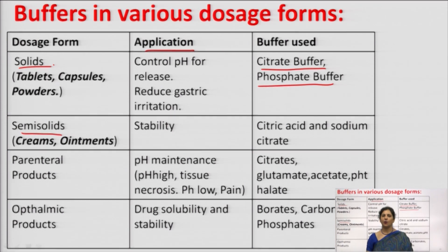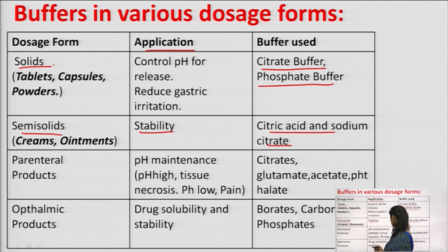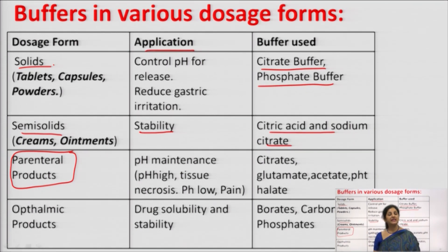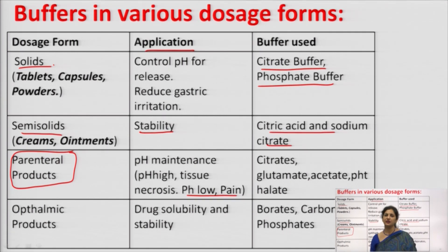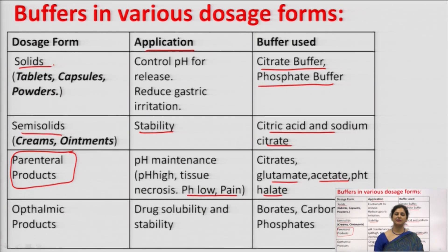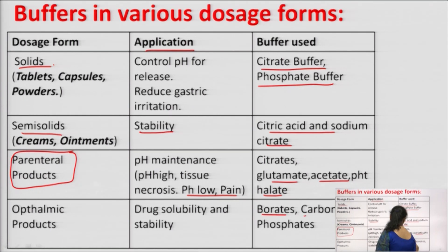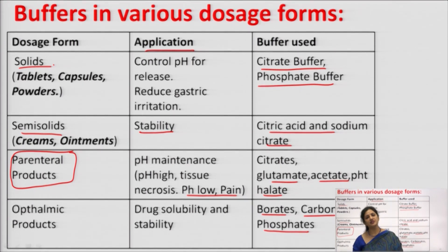In semi-solids such as creams and ointments, which degrade upon prolonged storage, citric acid and sodium citrate buffer are added to maintain stability. In parenteral products that are directly injected, buffers maintain the pH — low pH causes pain, and high pH causes tissue necrosis. Citrate, glutamate, acetate, and phthalate buffers are used. In ophthalmic products, buffers enhance drug solubility and maintain stability; borates, carbonates, and phosphates are used.